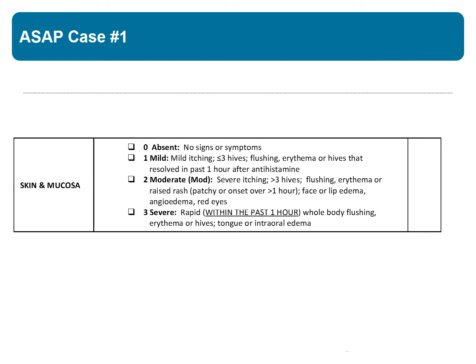For skin and mucosa, he clearly had both hives and angioedema on his face and upper body. He meets more than the mild criteria, which would be less than three hives or rash and edema that resolved after an antihistamine. Looking at the moderate criteria, face or lip edema, angioedema, or red eyes — that seems to fit him well. The severe criteria would include rapid whole body flushing, erythema or hives, or tongue or intraoral edema, which is more than our patient has. So we give him a two in the skin and mucosa category.